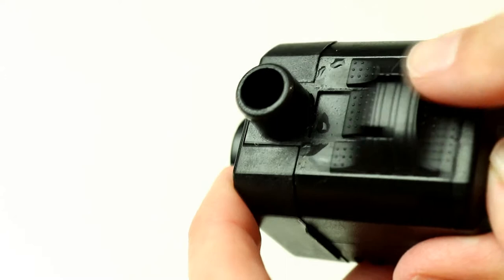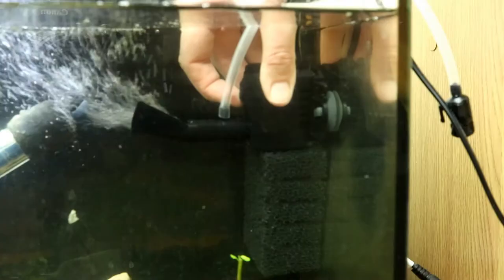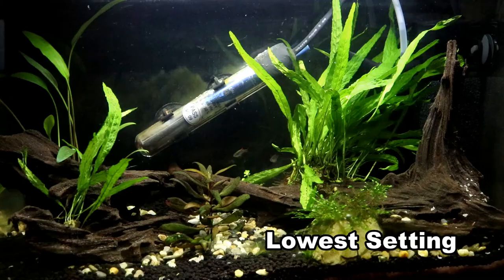You can adjust the flow to match the size of your tank using the regulator which is just here above the outlet and here it is with the filter on full blast, operating at around 400 liters per hour, and here it is on the minimum setting.